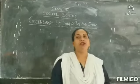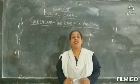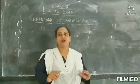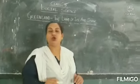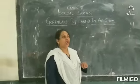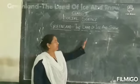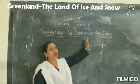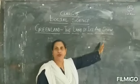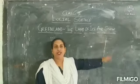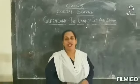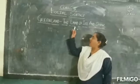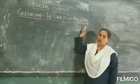Now we will discuss about the land of snow, the land which is covered with snow throughout the year. That is Greenland, the land of ice and snow. Today's topic is Greenland, the land of ice and snow.